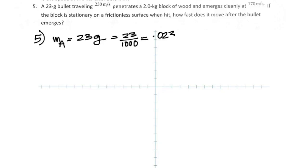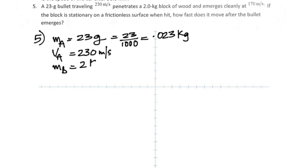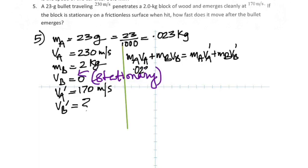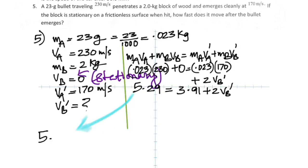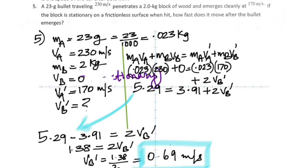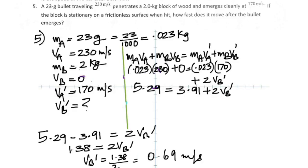You have the system of the bullet as the first object and the block of wood as the second. Initially, the block of wood is at rest, so its momentum is zero. The grams have to be converted into kilograms. The velocity of the bullet, object A, is 230; the mass of the block is 2 kilograms and it's not moving. The final velocity of the bullet is 170 meters per second, and you find the final velocity of the block. Applying conservation of momentum and calculating, you get the final velocity of the block of wood as 0.69 meters per second.